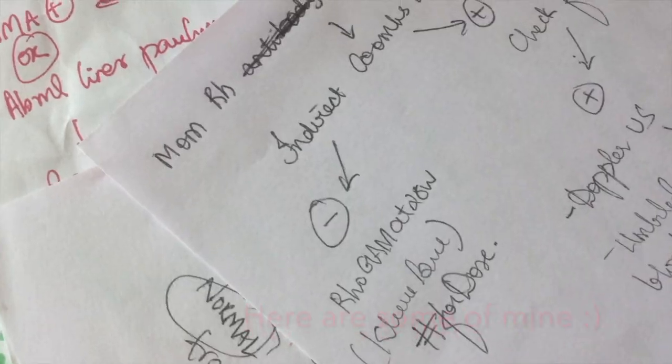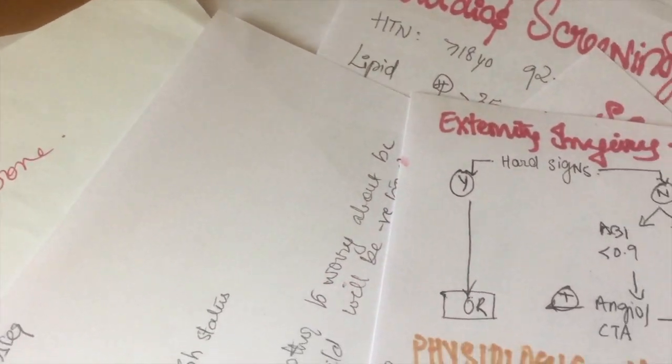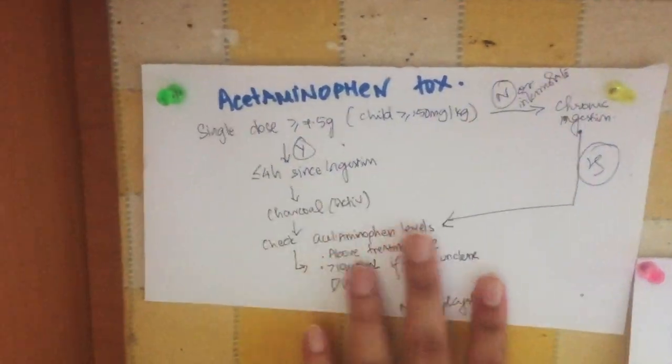For protocols, it may make sense to make flashcards for each step, but ultimately you need to see the big picture. That's when flowcharts become extremely helpful — make flowcharts for protocols, and make sure you look at them every day. Put them on your wall, doors, refrigerator, anywhere so you're reminded to review them.